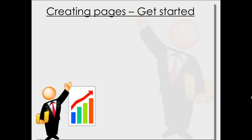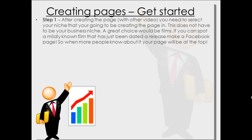So creating pages — get started, this is how you do it. Step 1. After creating the page with the other videos — so if you don't know how to actually create a Facebook page, watch the video that's within this bit somewhere. You need to select your niche that you're going to be creating the page in. Now this doesn't actually have to be your business niche. So you know, I'm doing internet marketing here, I could go away and I could do films. A great choice would be films. So whatever you're doing, you could do films, you could do dogs, you could do absolutely anything that appeals.